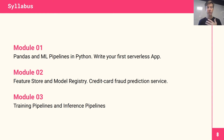The course is built up into a number of modules, and each module will run for one week. In module one, we'll cover pandas, machine learning pipelines, and Python, and we're even going to write our first serverless app — a variant of the Iris flower dataset. In module two, we're going to go into more detail on features, how we manage features and models. We're going to look at the credit card fraud prediction service, which will be the main project we'll work through throughout this course.